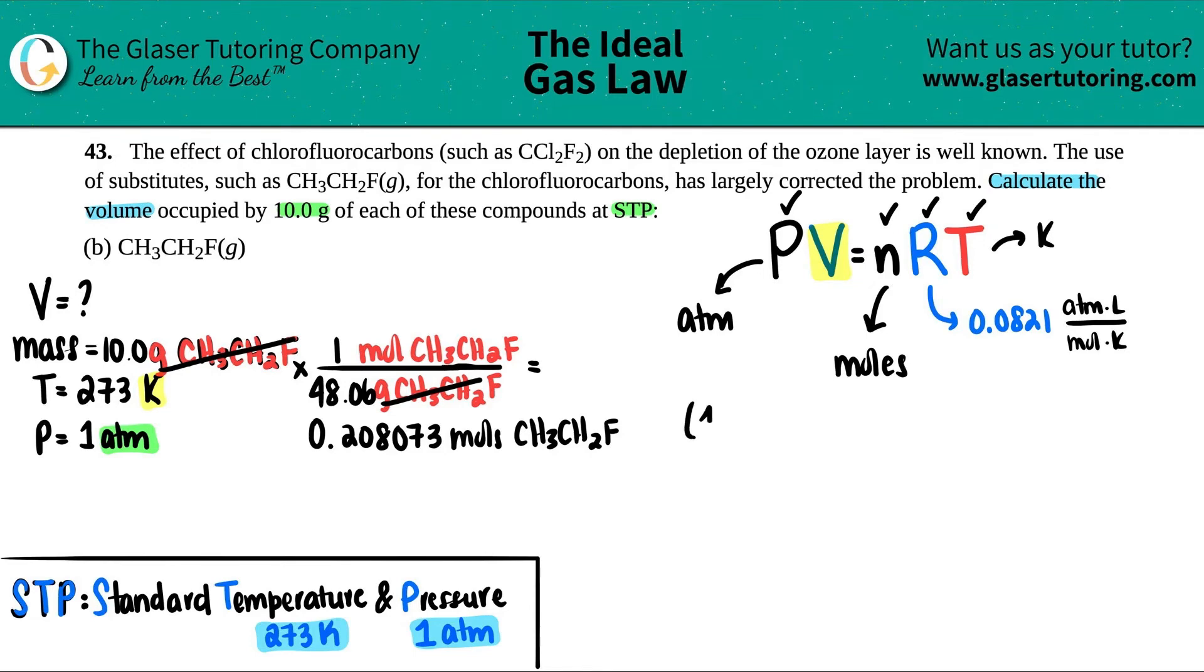PV, so 1 times the volume equals NRT. The number that we just found, 0.208073, times the R value, 0.0821, and then the temp value is 273.